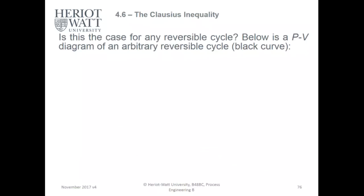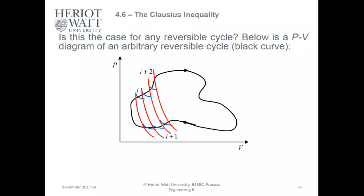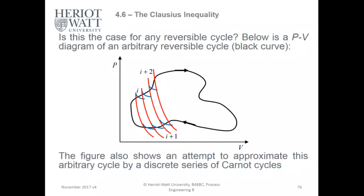Is this the case for any reversible cycle? This PV diagram shows an arbitrary system. When you heat up, you increase the pressure. You put work in, you increase the pressure. When you release the heat, you decrease the pressure and change the volume. This figure also shows an attempt to approximate this arbitrary cycle by a discrete series of Carnot cycles.